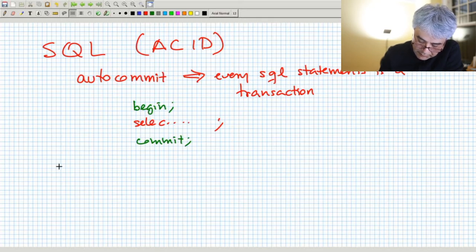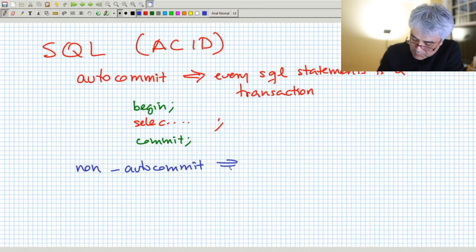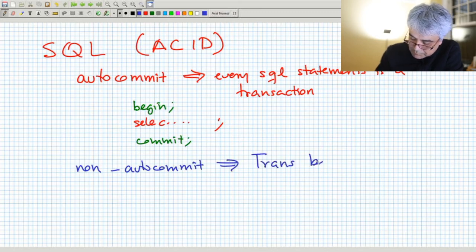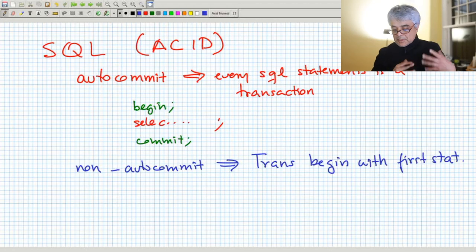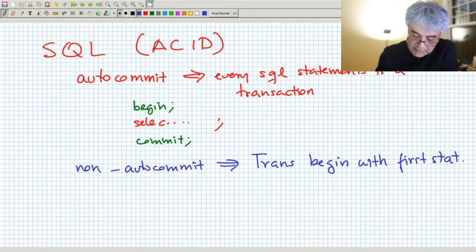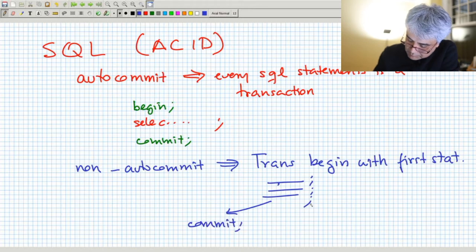This also means that when we have regular non-autocommit, the transaction begins with the first statement. So the moment that we start to send operations to the DBMS the transaction starts, so we don't have to explicitly say begin. So the begin is really not necessary. And then at the very end we have our statements, each one of them finish with semicolon in the case of psql, and at the very end we either commit or rollback.